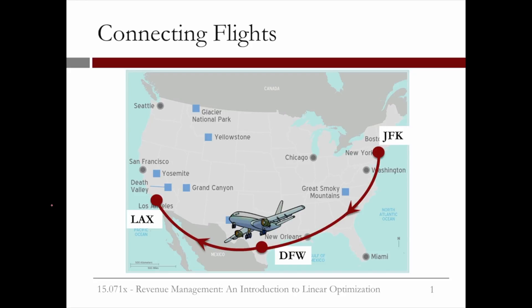Instead of just being able to go from JFK in New York to LAX in Los Angeles, let's suppose that the plane stops in Dallas, at the Dallas-Fort Worth Airport. We still are just using one plane, but the passengers can now fly from New York to Dallas, Dallas to Los Angeles, or from New York to Los Angeles by just staying on the plane in Dallas.